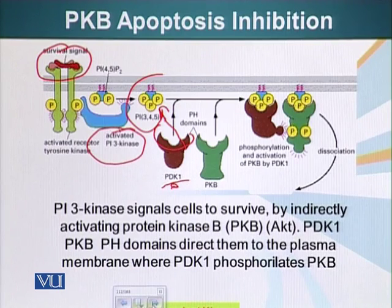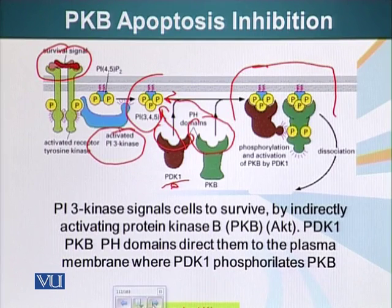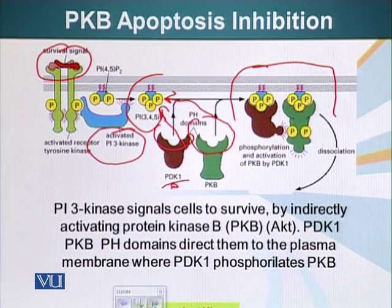In this case the substrate is PKB — protein kinase B. Protein kinase B also has a PH domain, which allows this PKB molecule to be recruited to the plasma membrane. Just like in the previous example, this brings these two molecules into close vicinity, since one is the enzyme and the other is the substrate. When they are both on the cytoplasmic side of the plasma membrane, PDK1 phosphorylates PKB. When PKB is phosphorylated it undergoes a conformational change that allows it to dissociate from PIP3 and move to the cytoplasm.